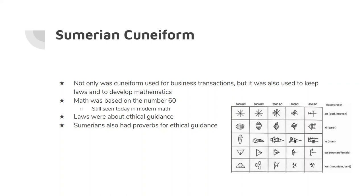Their laws were all about ethical guidance. Some examples of Sumerian law: if a man entered the orchard of another man and was seized there for stealing, he shall pay 10 shekels of silver — in other words, if you're caught stealing, pay for what you stole. If a man rented an ox and damaged its eye, he shall pay one half of its price — you break it, you buy it. If a man turned his face away from his first wife but she has not gone out of the house, and his favorite is a second wife, he shall continue to support his first wife — they make provisions for divorce, but you have to support your first wife.